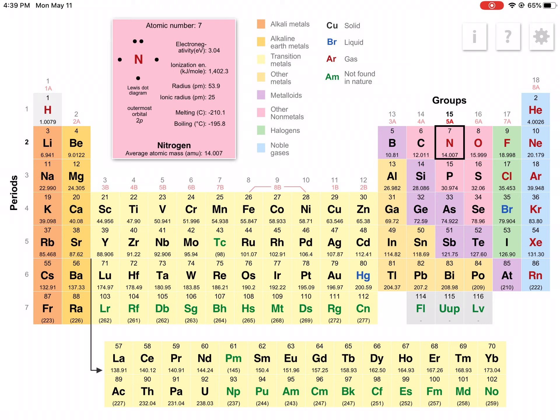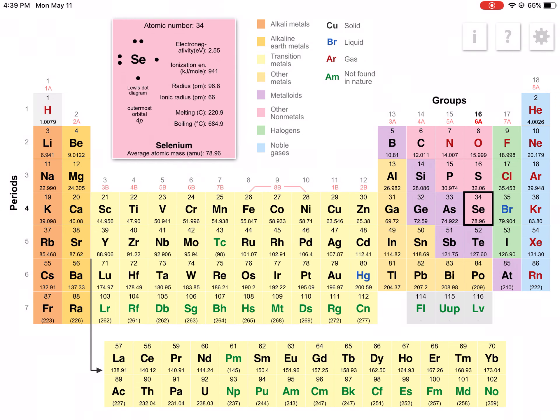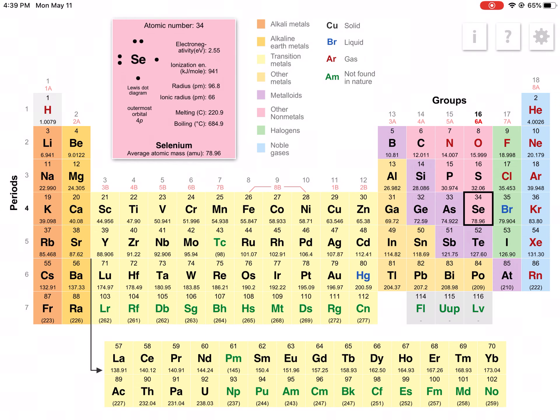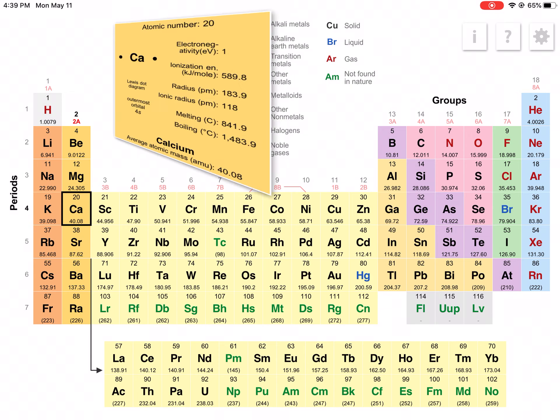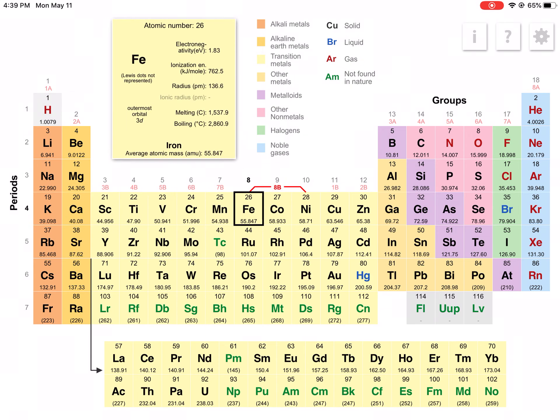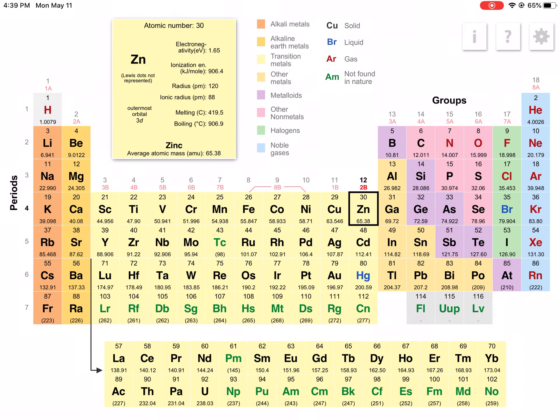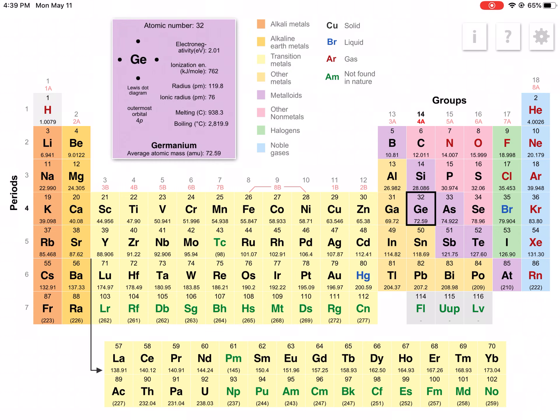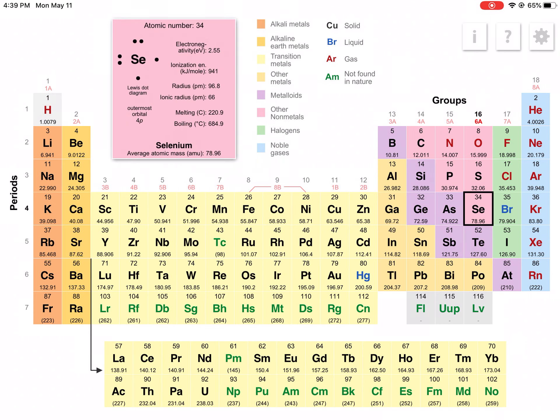The reason why I'm showing this to you is some of you seem to be getting confused on elements like selenium for example. So if you look at selenium you might think it's the sixteenth element in its row so it should have sixteen electrons around it. But when we do this we actually don't count that block that's in the middle there.